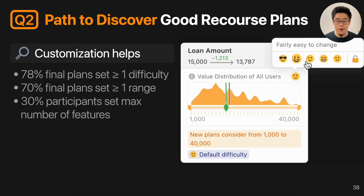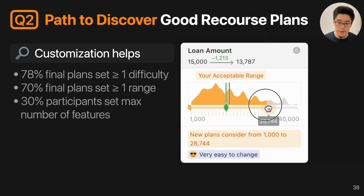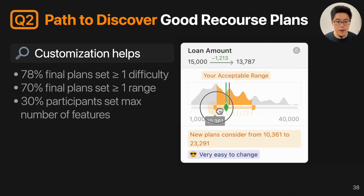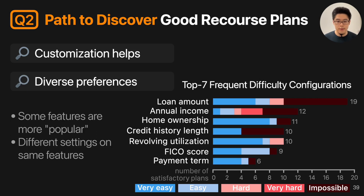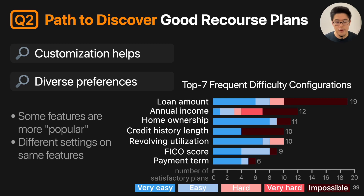Next, we studied the path to discovering good plans. Recall that in GankCoach, users can change the difficulty of features or specify a range for different features. We found the majority of participants used those customizations, and customization really helped them find good recourse plans. We also found that among configurations, people have very different preferences. In a triplot visualizing the top seven most frequent difficulty configurations, some features were more popular — for example, loan amount was more commonly assigned preferences. But even for popular features, people differed: for some participants it was impossible to change the loan amount, while for others it was very easy.